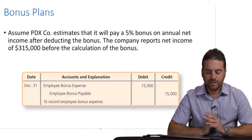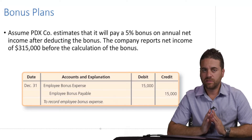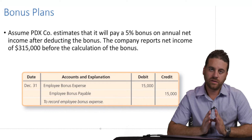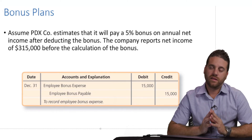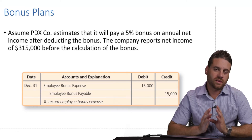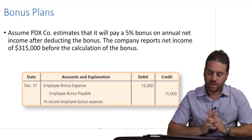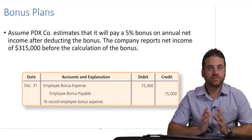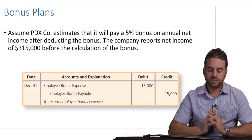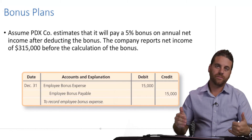Hi. We're starting Chapter 11. Chapter 11 is all about current liabilities — in other words, the short-term liabilities, money that we owe to creditors within less than one year.